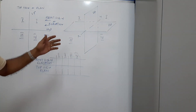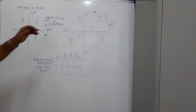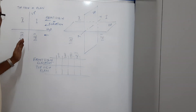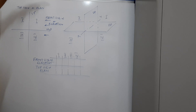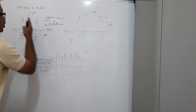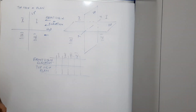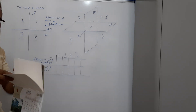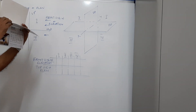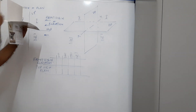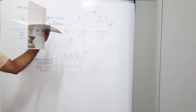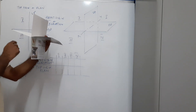Wherever the object is, the view from the front is called the front view or elevation, and it is drawn on the VP. The top view is drawn on the HP. This is a pictorial representation of the four quadrants — first quadrant, second quadrant, third quadrant, and the fourth quadrant.